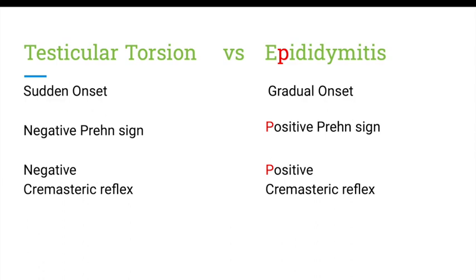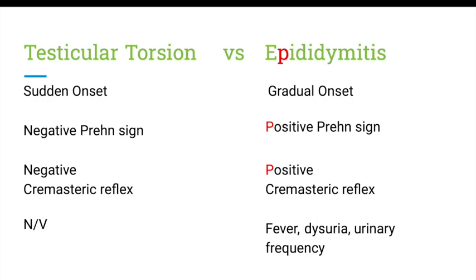Patients with testicular torsion can experience nausea and vomiting, while patients with epididymitis experience fever and urinary symptoms such as dysuria and urinary frequency. A memory trick: the 'P' in epididymitis helps you remember the positive Prehn's sign and positive cremasteric reflex — those three P's are an easy way to remember key clinical features for extra exam points.